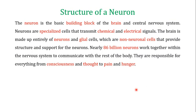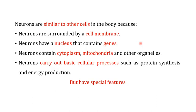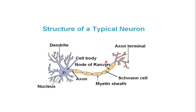Then we discussed the structure of the neuron. I told you that neurons are the building blocks of the brain and the central nervous system. There are two types of cells in the nervous system: neurons, which are responsible for transmitting chemical and electrical signals, and glial cells, which are non-neuronal cells providing structure and support to the nervous system. Neurons are very similar to other cells of the body — they have a cell membrane, nucleus, genes, cytoplasm, and mitochondria — but they also have special features.